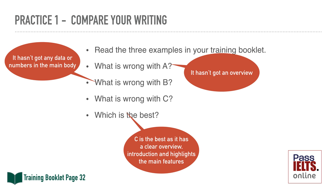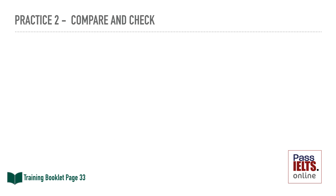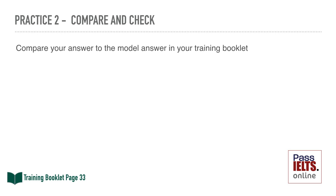Now go to practice two in your training booklet and practice writing a task one on your own in the set time of 20 minutes. First, go to the practice task and set your timer for 20 minutes. During the time that you're writing, you can pause this video and restart it when you have finished. Don't forget to follow the guidelines on the timings given. Once you finish, you can compare your answer to the model answer in your training booklet. If you would like feedback on any of your writing, please don't hesitate to contact us.